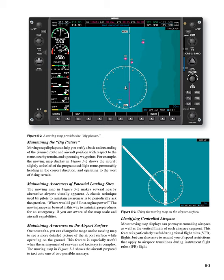Maintaining awareness on the airport surface: on most units, you can change the range on the moving map to see a more detailed picture of the airport surface while operating on the ground. This feature is especially useful when the arrangement of runways and taxiways is complex. The moving map in Figure 5-3 shows the aircraft prepared to taxi onto one of two possible runways. Identifying controlled airspace: most moving map displays can portray surrounding airspace as well as the vertical limits of each airspace segment. This feature is particularly useful during VFR flights, but can also serve to remind you of speed restrictions that apply to airspace transitions during IFR flight.